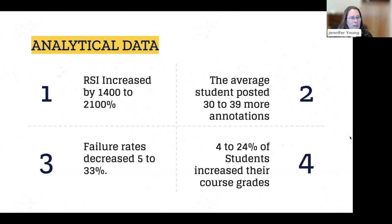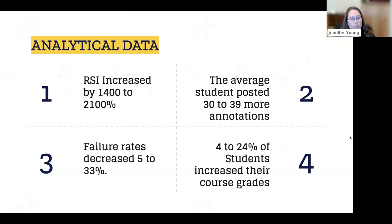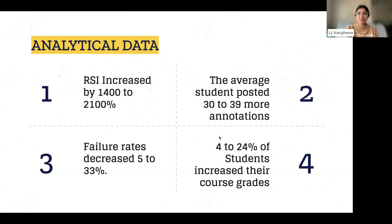In many classes, instructors use discussion boards for maybe the introductory assignment and then one per chapter, with very strictly formatted interactions. But the freedom that social annotation provides allows students to be more creative and engage in other ways. The third thing we noticed was that failure rates decreased 5 to 33 percent — in a class of 8 to 15 or 30 to 60 students, that makes a big difference in student success. Four to 24 percent of students also increased their course grades, going from F or withdrawal to A's and B's — a pretty impressive change over one semester with just a simple integration of this annotation tool.